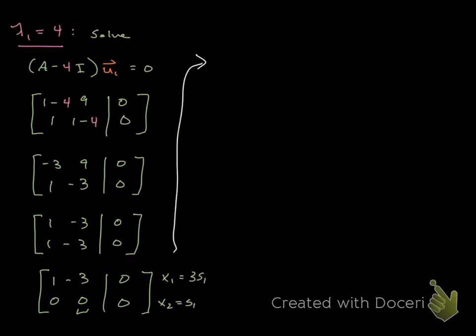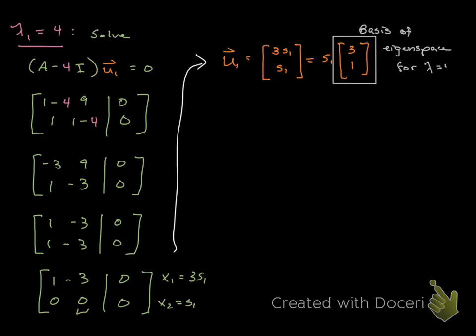So what we write is our u₁, our first eigenvector, should be [3s₁; s₁], which we commonly simplify by bringing the s₁ out and writing [3; 1]. That vector [3; 1] will be the basis for the eigenspace corresponding to λ = 4. That u₁ shows up in our general solution.